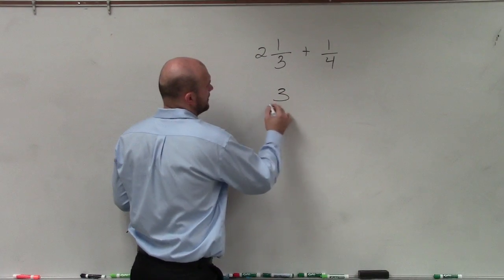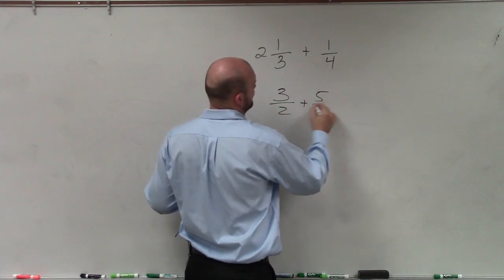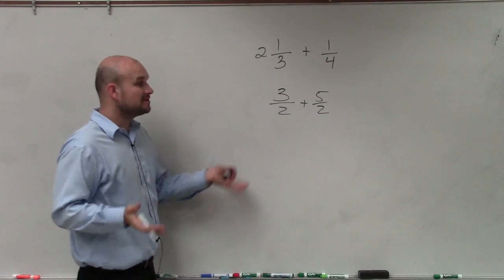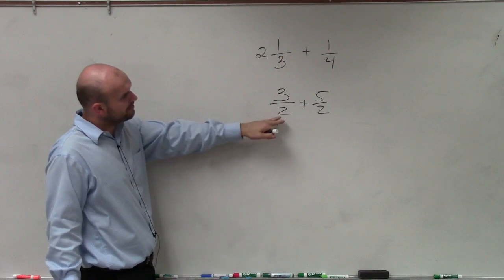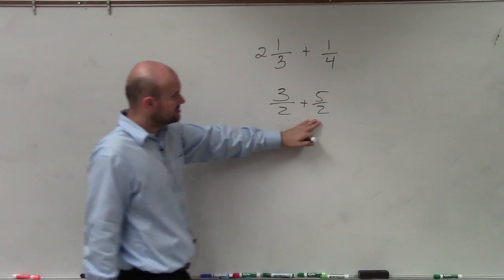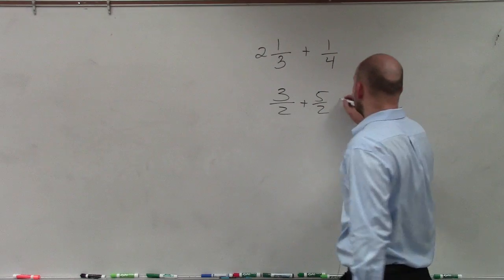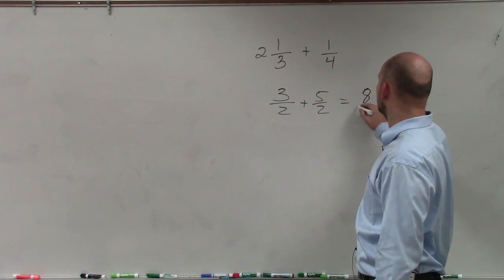If I have 3 halves plus 5 halves, all right? Remember, as long as the fraction, and this is going to be true for adding or subtracting, so I'm not going to go through both of them. But remember, whenever you're adding fractions, as long as the denominator is the same, we just combine our numerator.